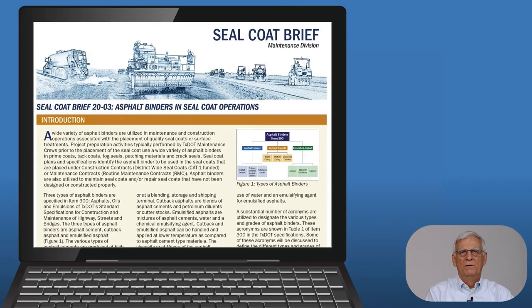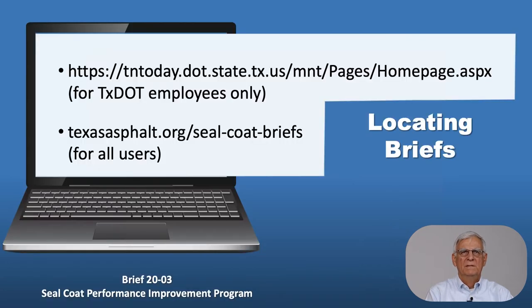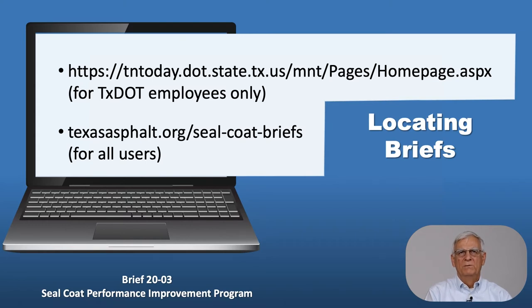This will give you a broad overview of the asphalt binders that are identified in item 300 of your specification book. This brief can be located on these two websites, which are available to TxDOT personnel and to contractor and other personnel. These briefs are recorded and available to you in that form, and the slide presentations we're using are available on these websites as well.